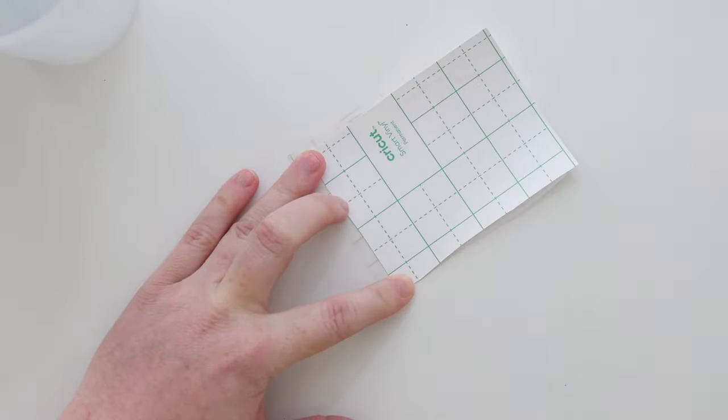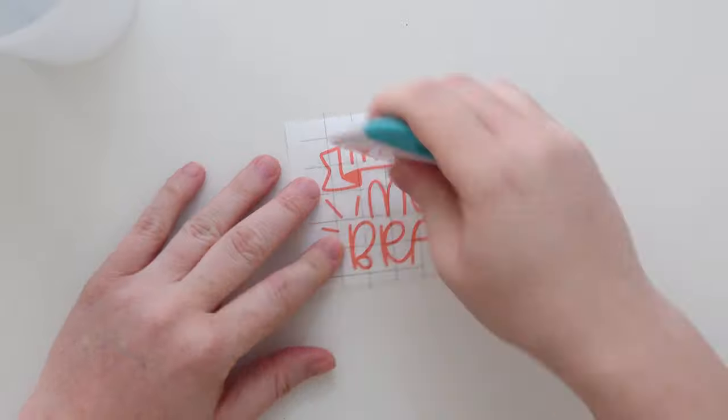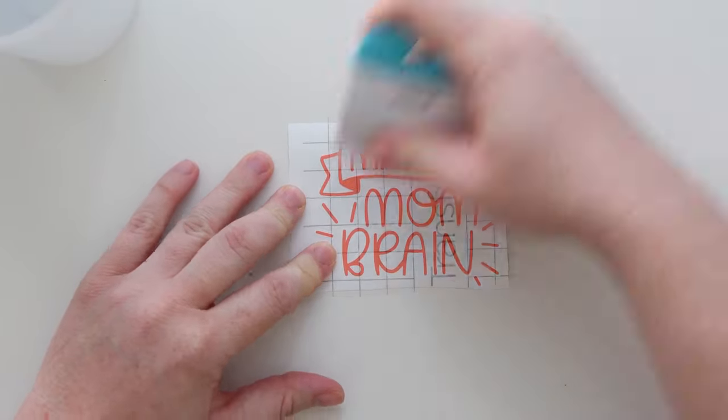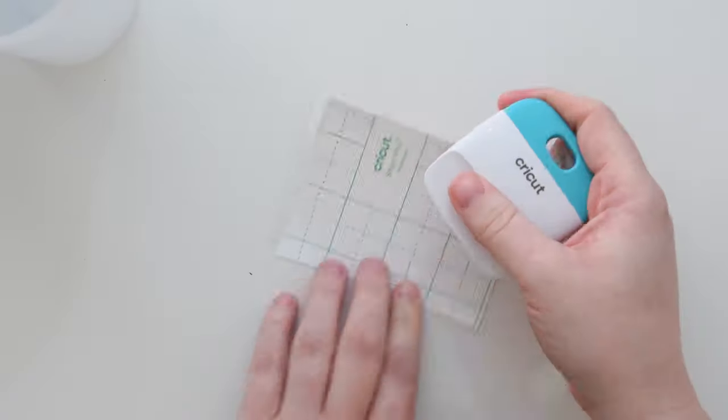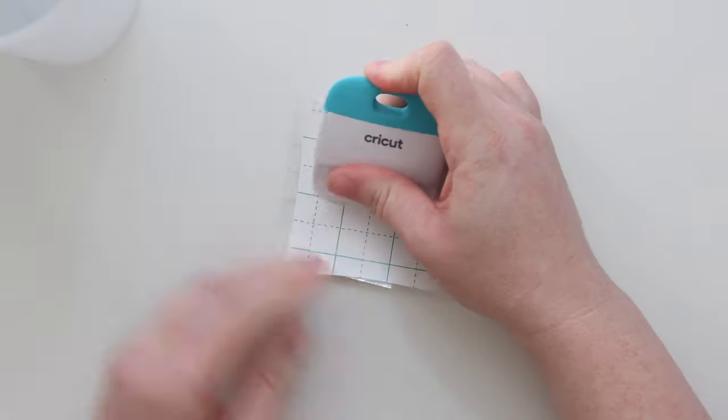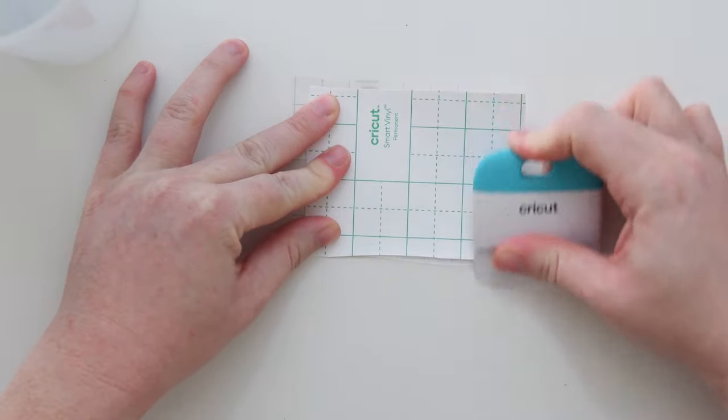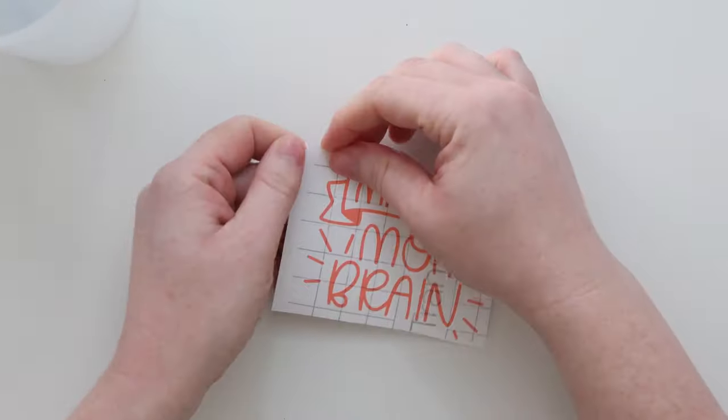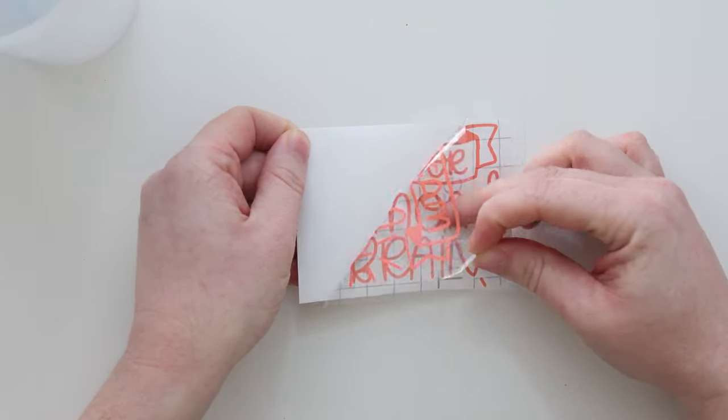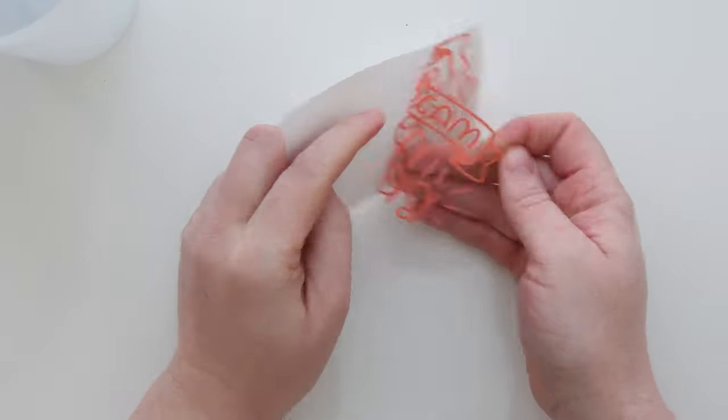Once I've run the blow dryer over the front and back I will use my scraper tool again and scrape up again starting in the middle and going up and then down on the transfer tape as well as the backer and then flip over your design and slowly peel your transfer tape off and your vinyl comes off like magic.